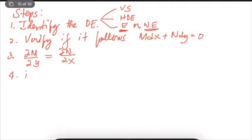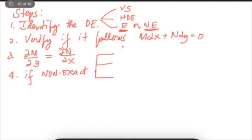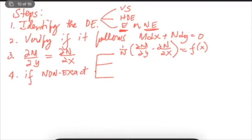If non-exact, you proceed to find the integrating factor using three cases. Case 1: compute 1 over N times the quantity (partial derivative of M with respect to y minus partial derivative of N with respect to x). This expression should be exclusively in terms of x. Case 2: compute 1 over M times the quantity (partial derivative of N with respect to x minus partial derivative of M with respect to y). This should be a function of y only.